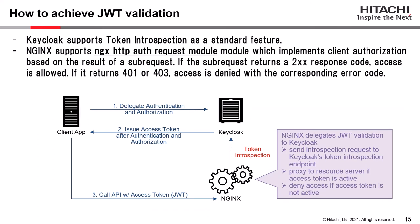How to achieve JWT validation with Keycloak and NGINX: Keycloak supports token introspection as a standard feature, and NGINX supports the NGINX HTTP OAuth request module, which implements client authorization based on the result of a subrequest. If the subrequest returns a 200 response code, access is allowed; if it returns 401 or 403, access is denied with the corresponding error code. Combining these features, we can make NGINX delegate JWT validation to Keycloak. NGINX sends an introspection request to Keycloak's token introspection endpoint, and if the access token is active, NGINX proxies to the resource server; otherwise, NGINX denies access.